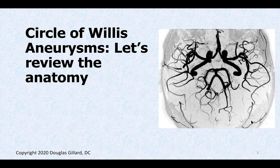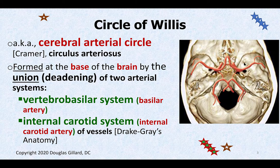To understand berry aneurysms, we need to understand or review the anatomy of the circle of Willis. It's a circle of arteries that basically lives at the base of the skull — specifically in the middle cranial fossa. Here's an overhead view of the skull where we've taken off the skull cap or calvarium and are looking down. This is the circle of Willis. It is said to be created by two major systems: the internal carotid artery system and the vertebral basilar system.